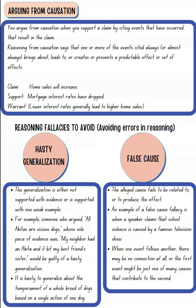False cause is when your support fails to properly relate to the claim. For example, claiming that school violence is caused by a popular violent television show. This is false cause because there can be many other factors causing violence in school — the TV show may be one factor, but it is not necessarily the main reason.